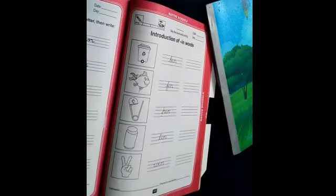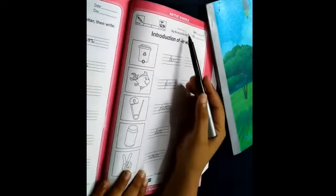Okay students, now take out your English book and page number 127. Firstly we mention the date and day on top of the page. You haven't mentioned date and day here.